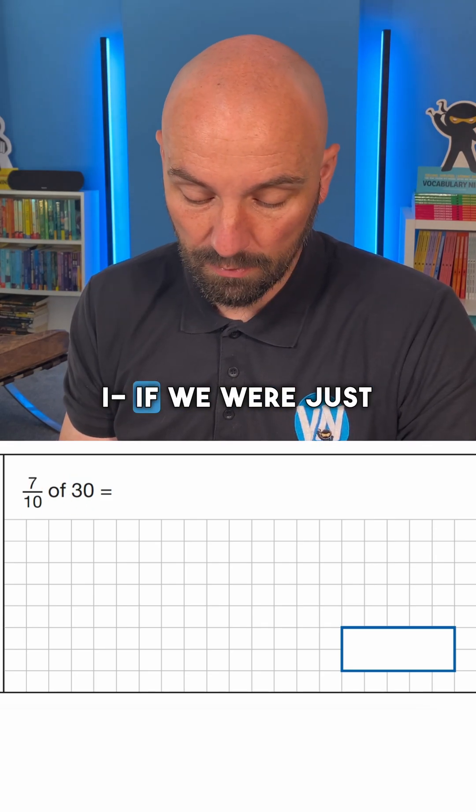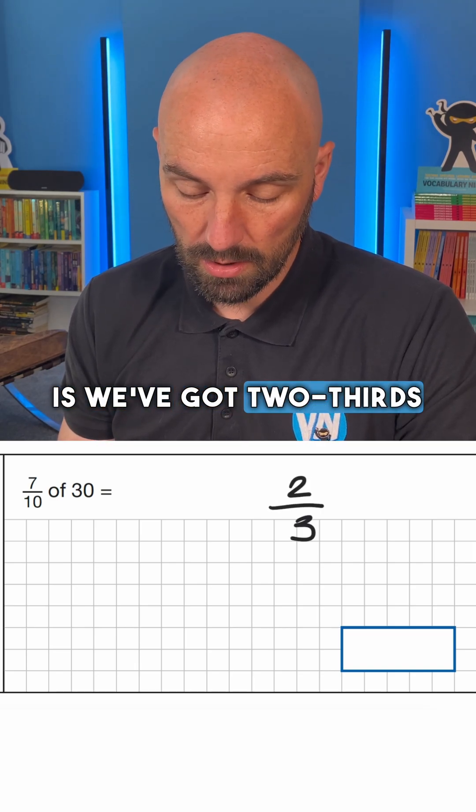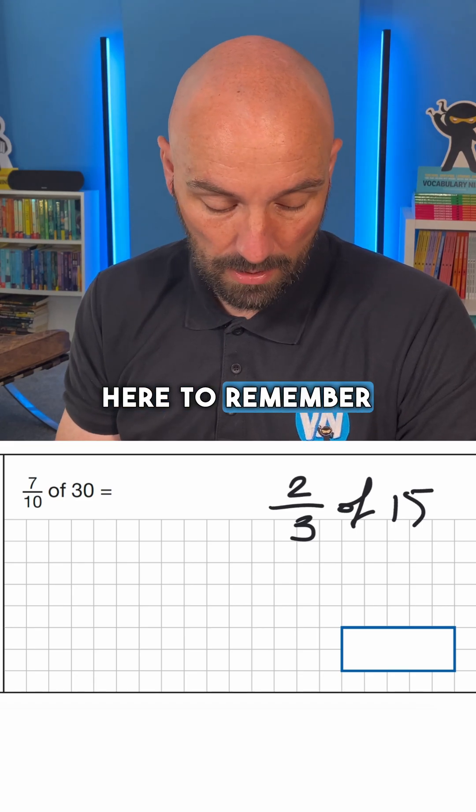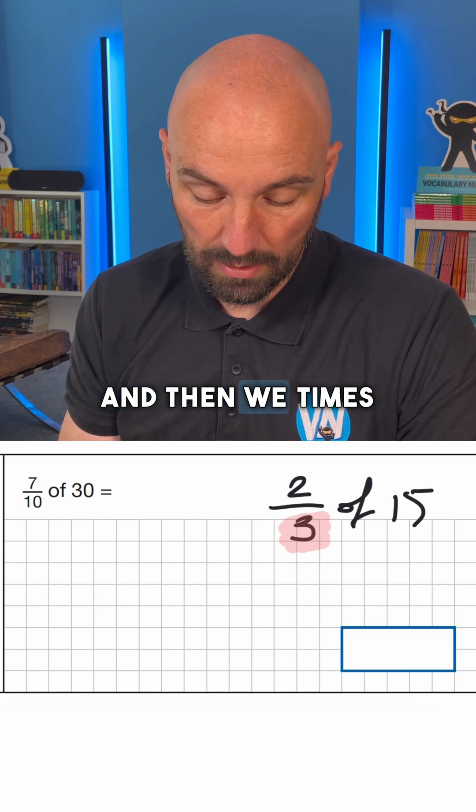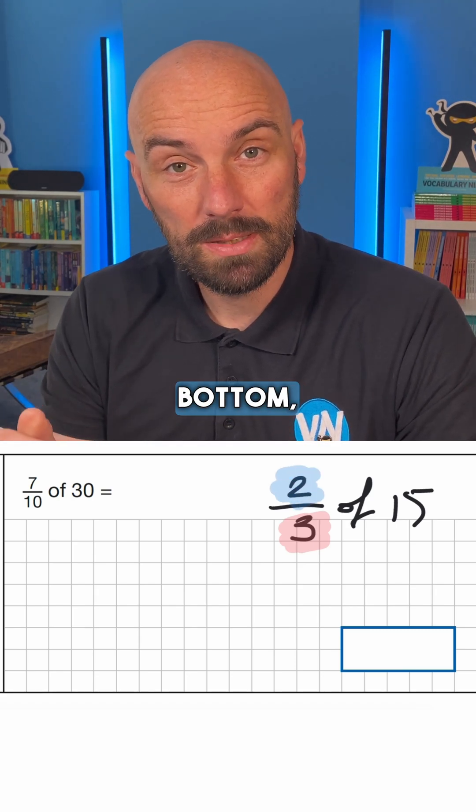Now the little rule here, if we were just to write out another question as an example, we've got 2 thirds of, let's say, 15. The little rule here to remember is that we divide by the denominator, and then we times by the numerator. Divide by the bottom, times by the top.